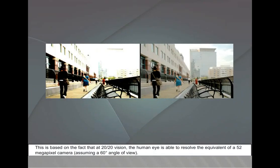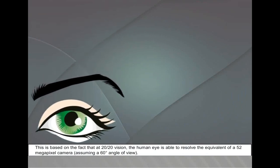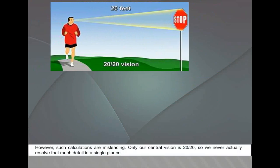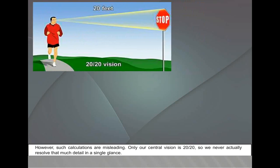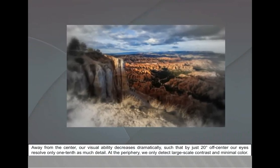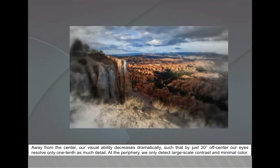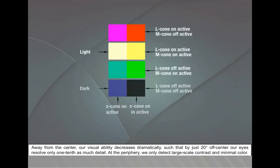Resolution and detail: Most current digital cameras have 5 to 20 megapixels, which is often cited as falling far short of our own visual system. This is based on the fact that at 20/20 vision, the human eye is able to resolve the equivalent of a 52 megapixel camera, assuming a 60 degree angle of view. However, such calculations are misleading. Only our central vision is 20/20, so we never actually resolve that much detail in a single glance. Away from the center, our visual ability decreases dramatically, such that by just 20 degrees off center, our eyes resolve only one-tenth as much detail. At the periphery, we only detect large-scale contrast and minimal color.